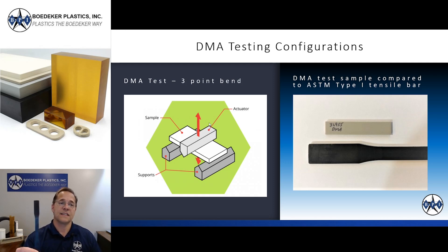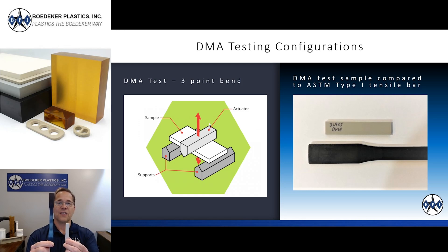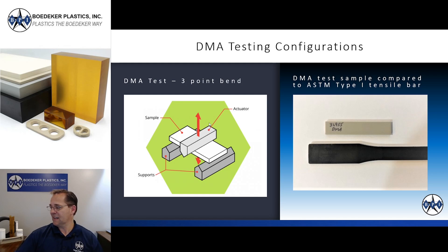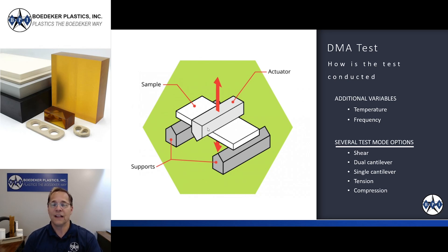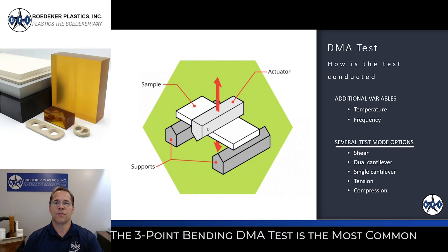For comparison, you can see a typical ASTM Type 1 tensile bar next to the smaller test bar used for the DMA test. The three-point bending test is the most common method for thermoplastic materials, though there are several different DMA test methods including shear, dual cantilever, single cantilever, and compression, among others.